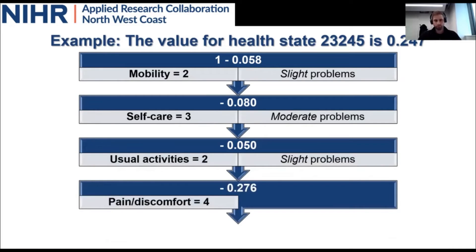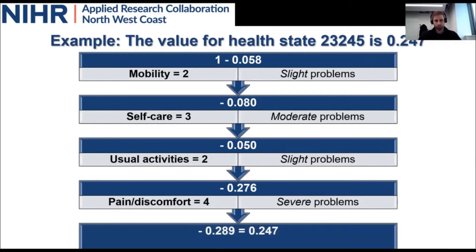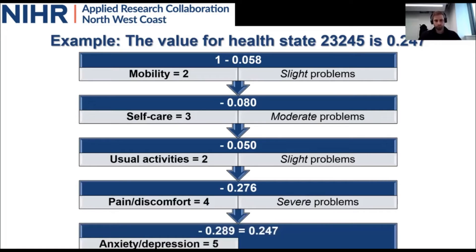Number 5 means extreme problems in anxiety and depression — the lowest score for that dimension — again with a large utility decrement. When you subtract all these utility decrements from full health (from 1), you get a particular value attached to this health state, which is 0.247. So that person would be at approximately 25% of the potential full health state.